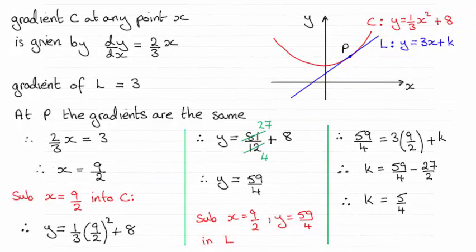Hi there. Now for this question, you had to work out the value of K for which L was a tangent to C. And the answer is K equals 5 quarters.